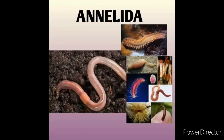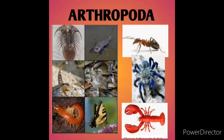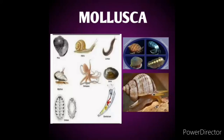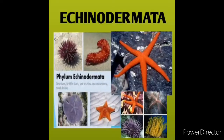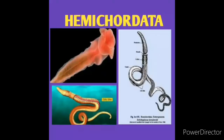Annelids have a segmented body like earthworm, leech, etc. Phylum Arthropoda consists of insects, crabs, ants — they have segmented legs. Phylum Mollusca consists of a shell over the body and a soft body inside. Echinodermata members have spiny skin with many spines. Hemichordata consists of members which have proboscis, collar, and trunk portions on the body.